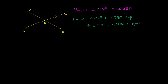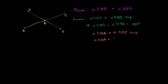We also know that angle DBA — right over here — and angle DBC are supplementary. This angle and this angle are supplementary; their outer sides form a straight angle, they are adjacent, so they are supplementary. Which tells us that angle DBA plus angle DBC is equal to 180 degrees.